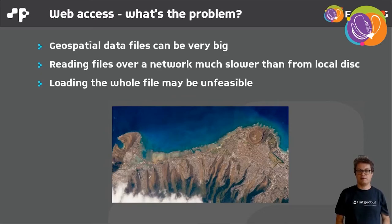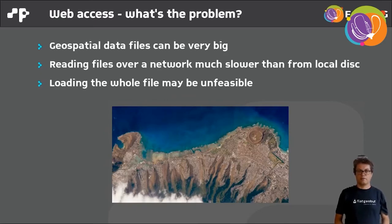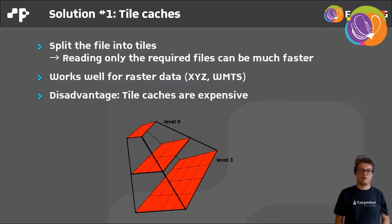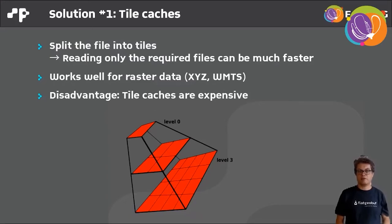What are solutions for this problem? You can create tile caches — you split the raster files into tiles and only have to load the tiles you're currently looking at. This has been working very well for years; think of XYZ or WMTS services. But it has several disadvantages. Tile caches are expensive in multiple ways: creating them takes time, it doubles the space required for each raster dataset, and it's also getting more difficult to use these rasters for analytical purposes.